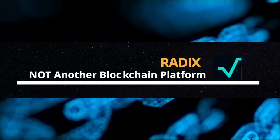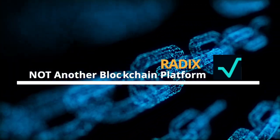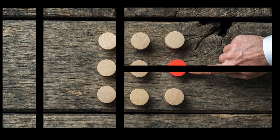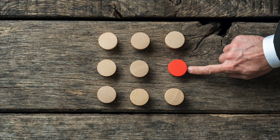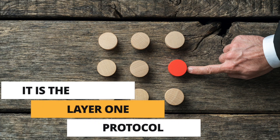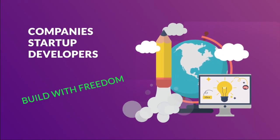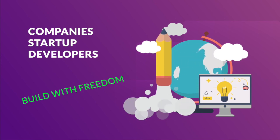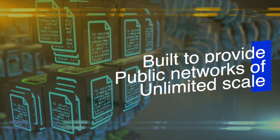Radix is not another blockchain platform. While others start from layer two and build on top of present technology, they remain bound by the limitations of their underlying technologies. Radix, on the other hand, is crafted as an entirely new and unique design, built to provide users with a layer one protocol so that companies, startups, and developers can build with freedom and without suffering limitations.